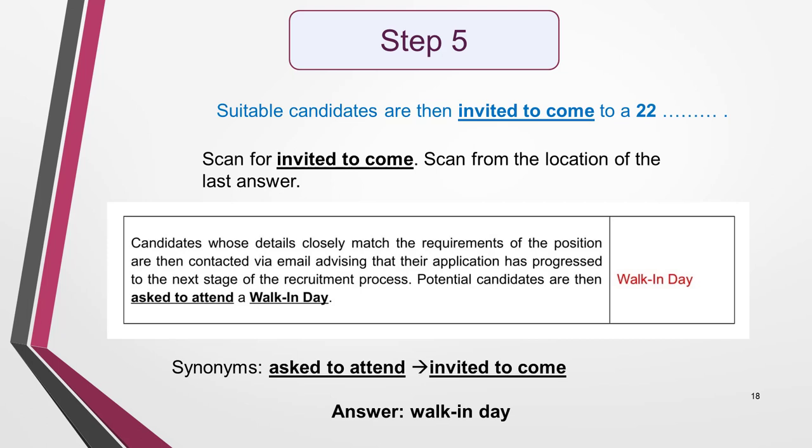I move on to the second sentence in the flowchart: 'Suitable candidates are then invited to come to a… something.' I choose the phrase 'invited to come to' to scan for. I suspect that a synonym or other form of paraphrasing might appear in the text, so I'm mindful of this as I scan. I also see that my next recorded note beside the text is 'walk-in day' and predict that this could be a good fit for the sentence. I scan from the location of the first answer in paragraph 2 and soon spot the phrase 'asked to attend,' which means the same as 'invited to come.' Candidates are asked to attend a walk-in day, so my prediction was correct and this is the answer. Note that hyphenated words such as 'walk-in' count as one word, so I'm within the word limit. I fill in my answer and move on.